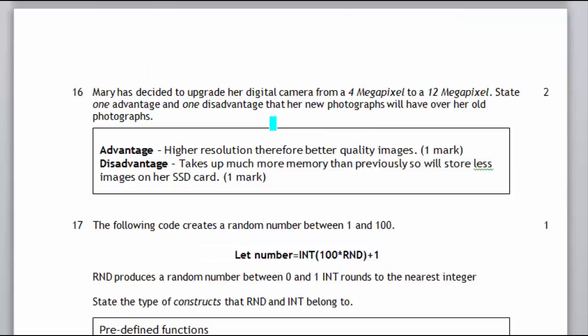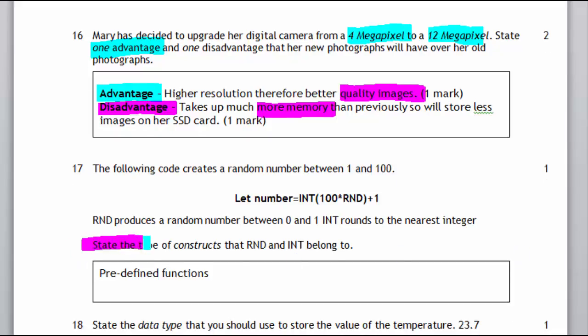It's going to be better quality images. Disadvantages is it's going to take up a lot more space for each. So you won't actually be able to save as many images on your card. So advantages always better quality. But the disadvantage is you've got less images that you can store because it takes up more. Now this question we missed out a line here. So you've got int, you've got RND, you've got round, we've got ucase, we've got lcase. And they're all examples of predefined functions.